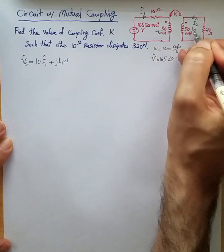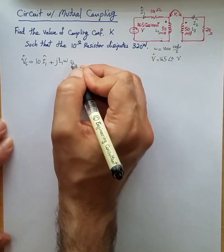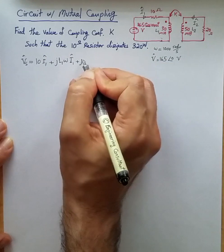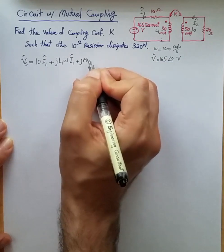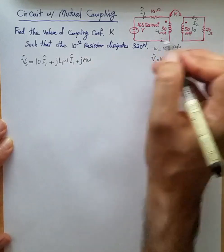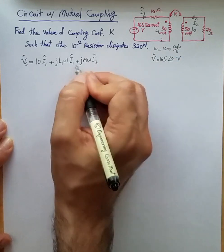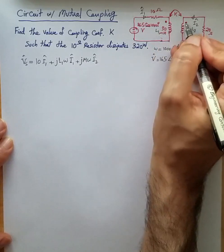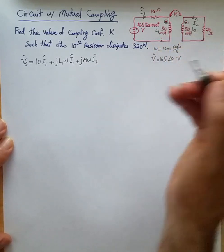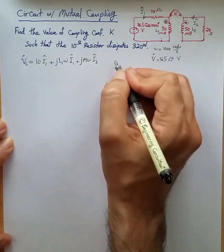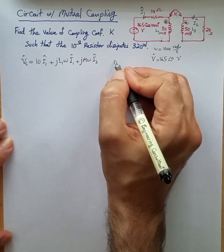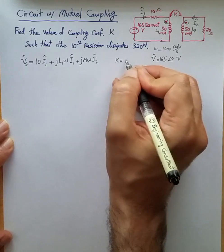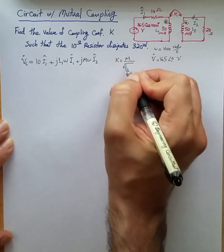this current goes through this inductor, so we have jωL1 times I1. L1 is this inductor, L2 is this inductor here. Then because of mutual coupling we have jMω, where M is the mutual coupling between these two inductors, times I2. The reason we have a positive sign is because both currents are entering the inductors as indicated by the dot symbols. The definition of the coupling coefficient k is M divided by the square root of L1L2.